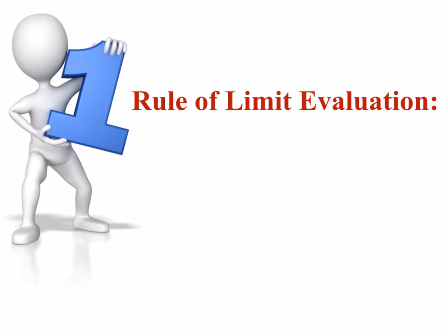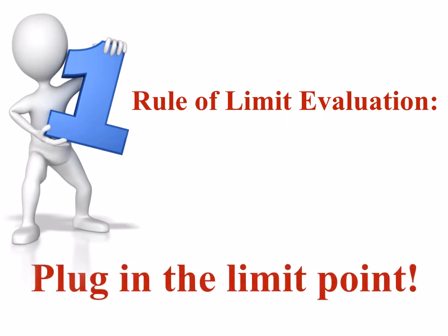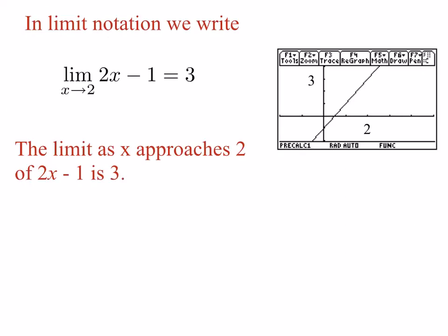Our first rule for finding limits is to plug in the limit point. The first rule of limits is to always take that limit point and plug it into the function. If you do that and you get a finite number, then this will be the value of the limit. For example, we have the limit as x approaches 2 of 2x minus 1, and we see that that's equal to 3.